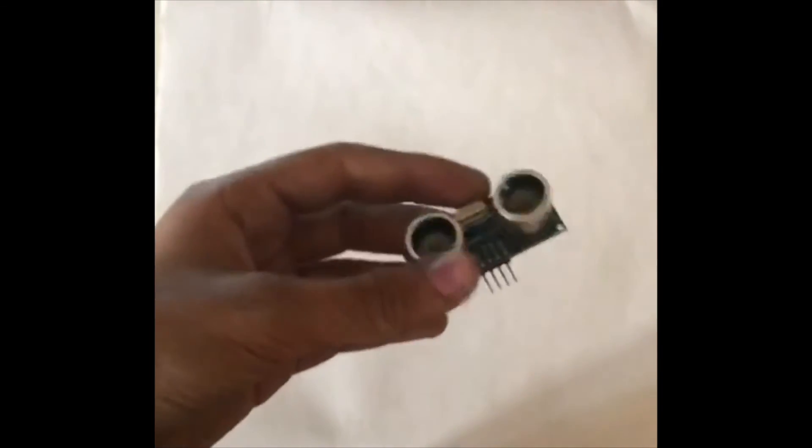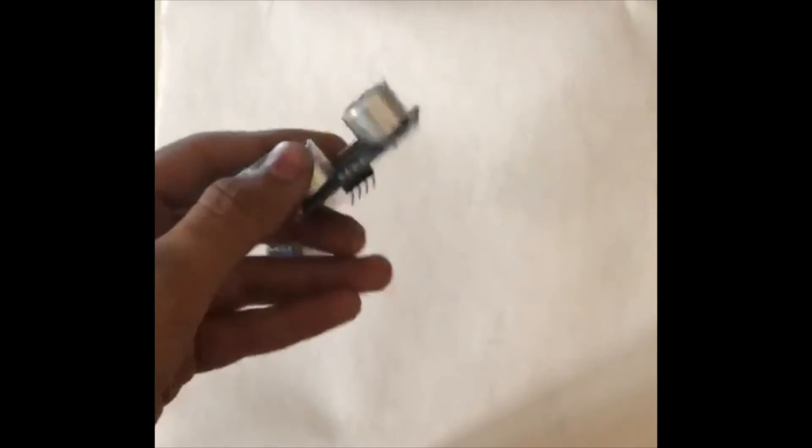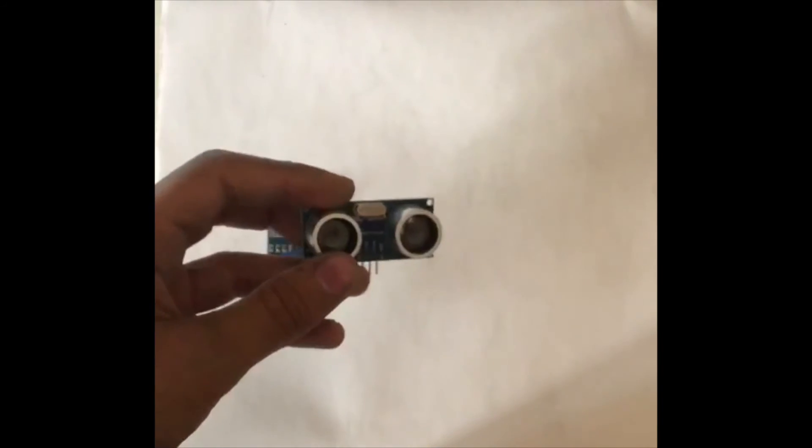And the appearance of an ultrasonic sensor is much different. The ultrasonic sensor also has a main board with four pins and two cylindrical shapes here which transmit ultrasonic waves and receive them.